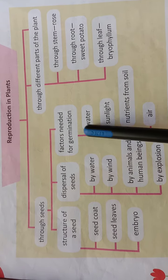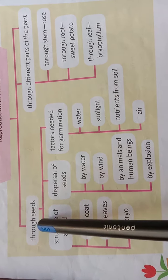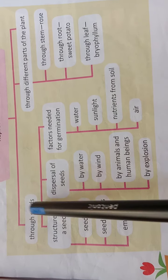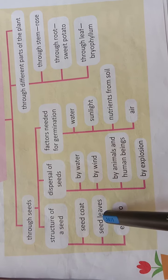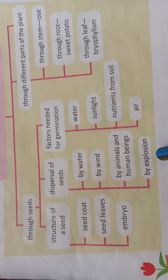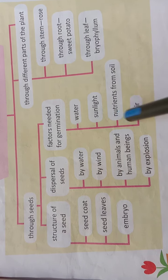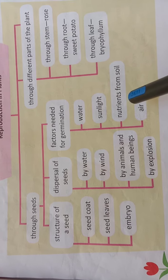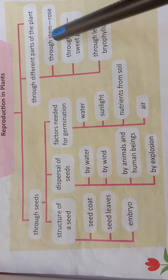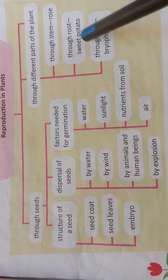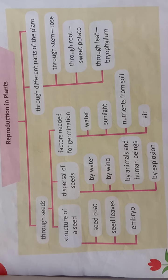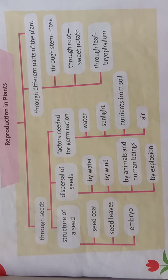So students, we have completed this chapter — chapter number 4, Reproduction in Plants. We learned: reproduction happens in two ways — through seeds and through different parts of the plant (stem: rose; root: sweet potato; leaf: Bryophyllum); seed structure (seed coat, seed leaves, embryo); dispersal of seeds by water, wind, animals and human beings, and by explosion; factors needed for germination — water, sunlight, nutrients from soil and air; and nurseries.